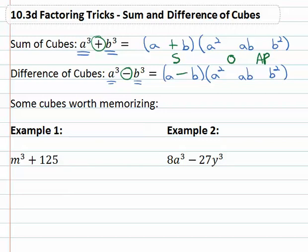The O tells me to use the opposite sign. So in the sum the opposite is minus, in the difference the opposite is plus. And the last one is always plus.